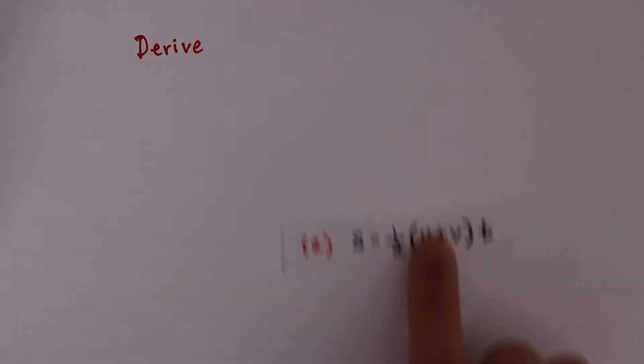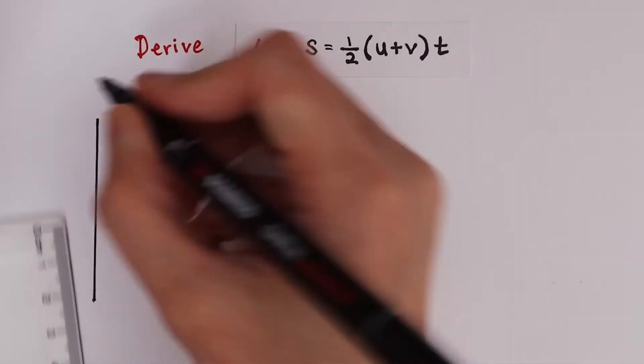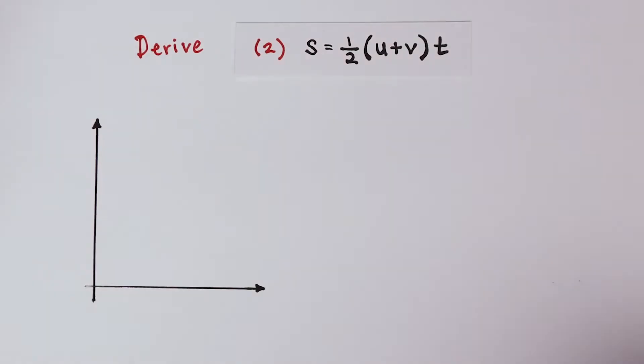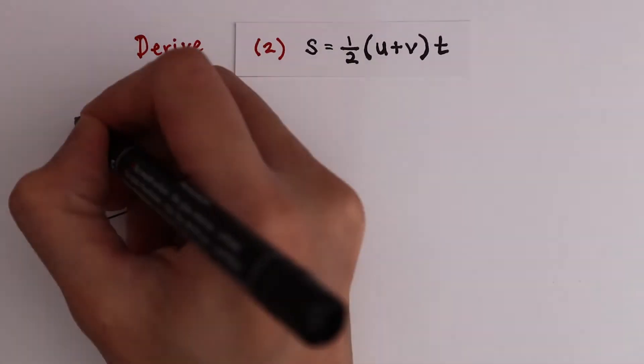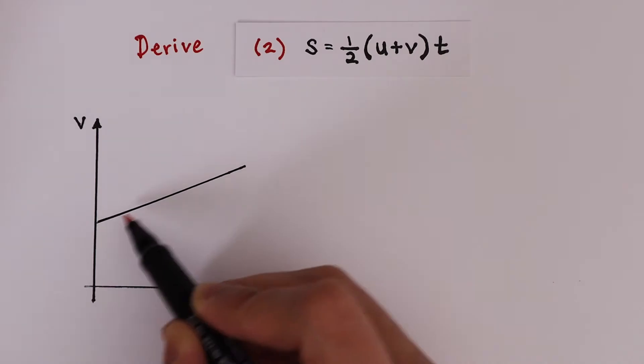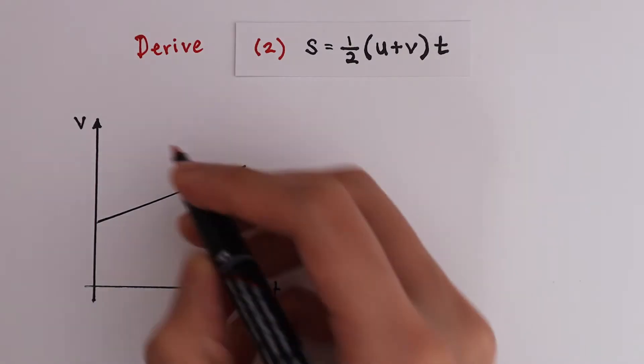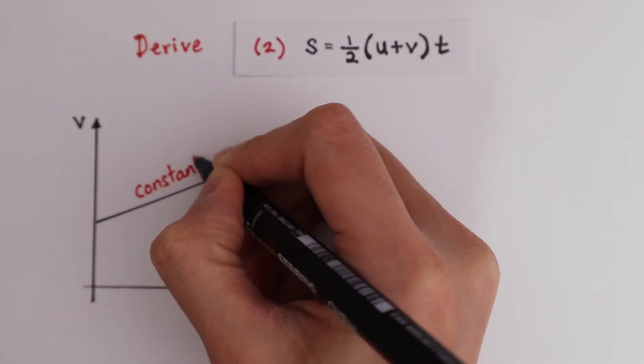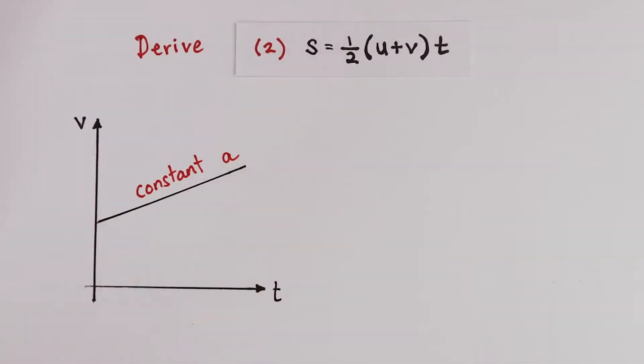To derive equation 2, let us begin with a velocity time graph. Recall that the gradient on a velocity time graph represents acceleration. So a diagonal line on a velocity time graph shows that the object is traveling with constant acceleration.